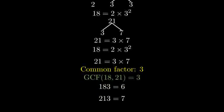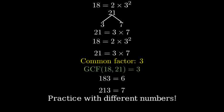We can verify this by dividing both numbers by 3. 18 divided by 3 is 6, and 21 divided by 3 is 7. Since 6 and 7 have no common factors, 3 is indeed the greatest common factor.